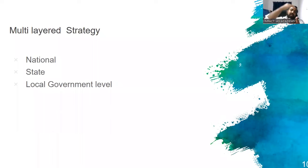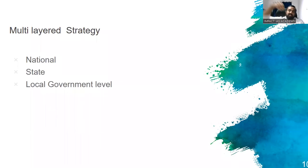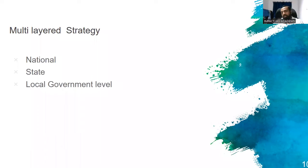A multi-layered strategy means what is being done at different levels of government. Naxalism cannot be tackled by any one level of government alone. If one state is active but the neighboring state is not, Naxals cross the border and find a safe haven there, making the active state's efforts ineffective. Every layer of government has its own role: at the local level, ensure policies are implemented correctly, minimum support prices are paid, and proper marketing facilities exist for tribal products.